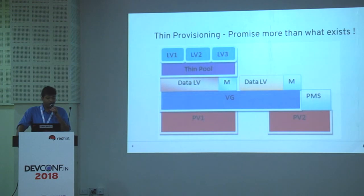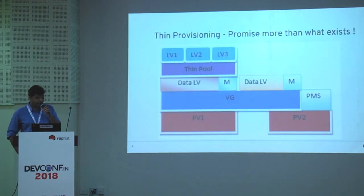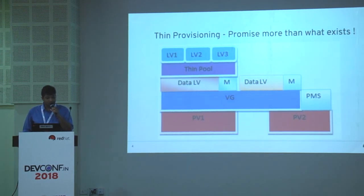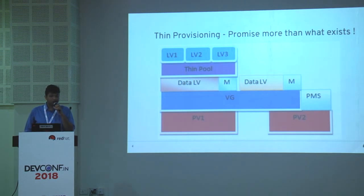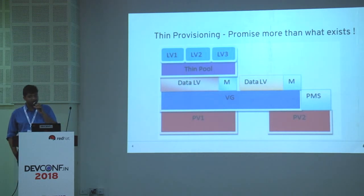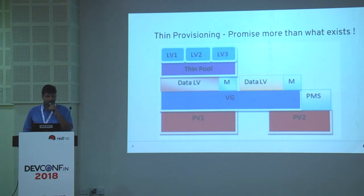You will see the hidden data and metadata volumes when you run the LVS -a command — they'll appear in square brackets. Out of the thin pool, you carve logical volumes just like you carve volumes out of volume groups in thickly provisioned storage. These are thin logical volumes and you can give them any virtual size you want. The thin pool size is limited to actual space taken from the volume group — it cannot be arbitrarily sized. Thin logical volumes can be virtually sized, and you can promise a user much more than what actually exists in the thin pool — typically about 80% larger than what you actually have.